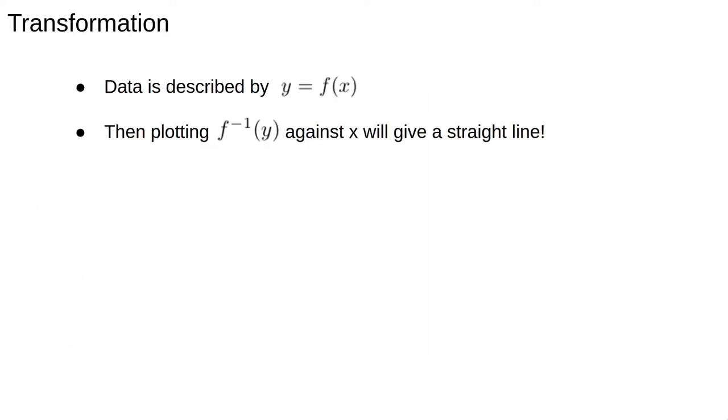If the data is described by a relationship y equals f of x, then plotting the inverse function of f applied to y as a function of x will give a straight line. To make this clear, let's say the functional relationship is y equals x squared plus 1, then plotting square root of y minus 1 against x will yield a straight line.